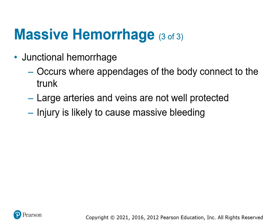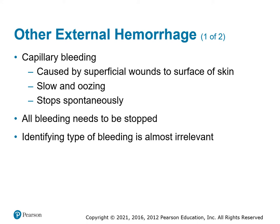Junctional hemorrhage occurs at the junction between an extremity and the body — the upper arm or the groin area — where very large arteries and veins are located with less muscle protection. Anywhere you feel a pulse is a junction, making these high-risk areas for massive bleeding. A specialized junctional tourniquet is available to address femoral junctional bleeds, particularly useful in environments with high risk of IED injuries to the lower body. Capillary bleeding from superficial wounds oozes slowly and most stops on its own; if needed, apply gauze with direct pressure.